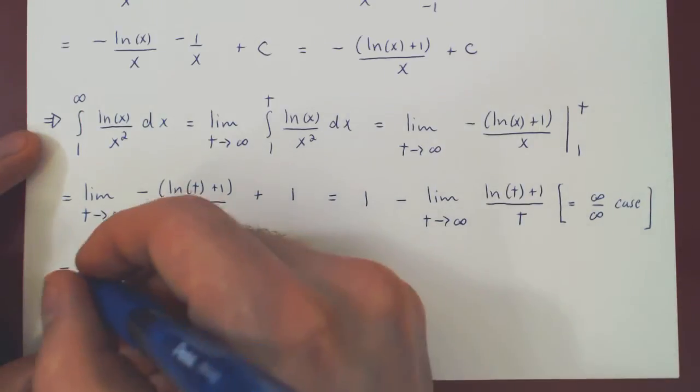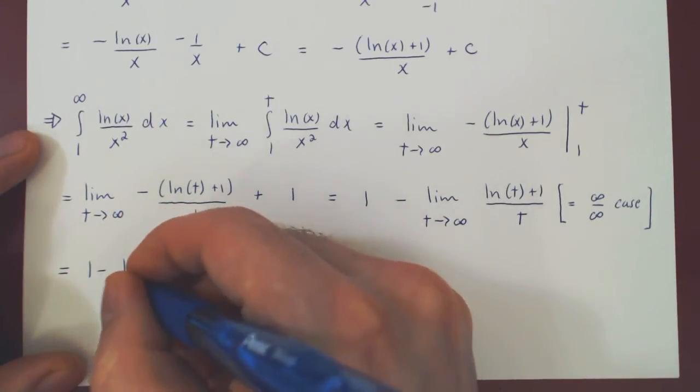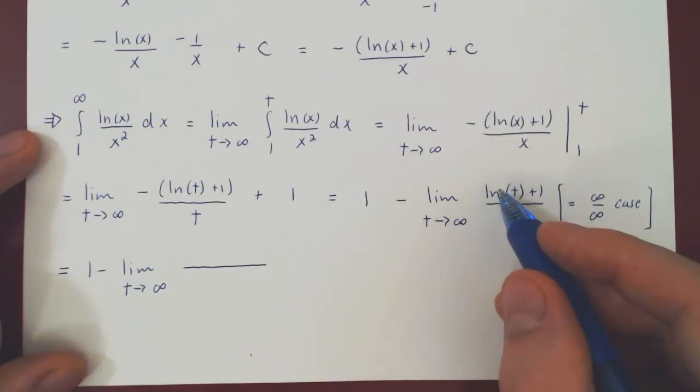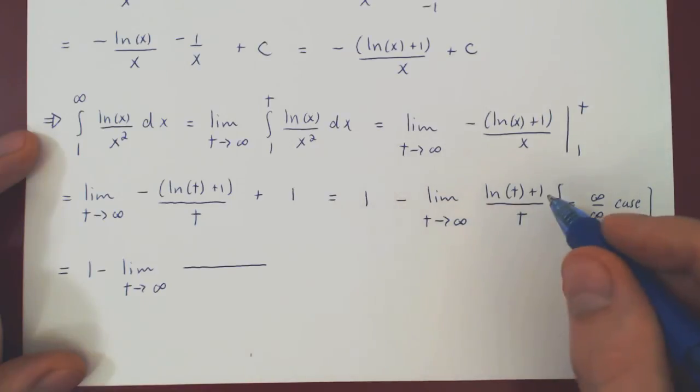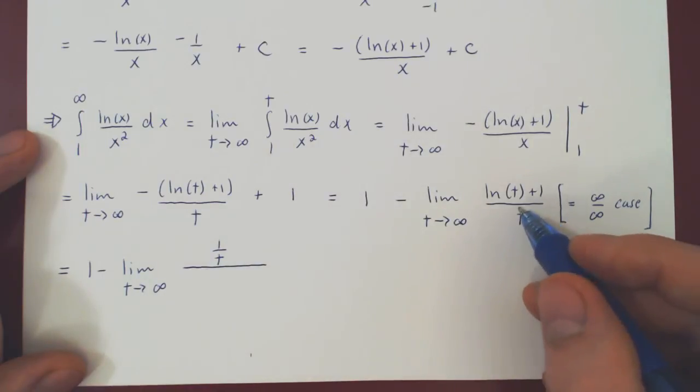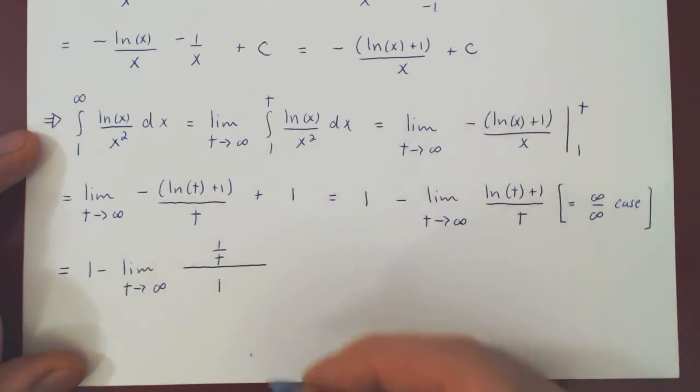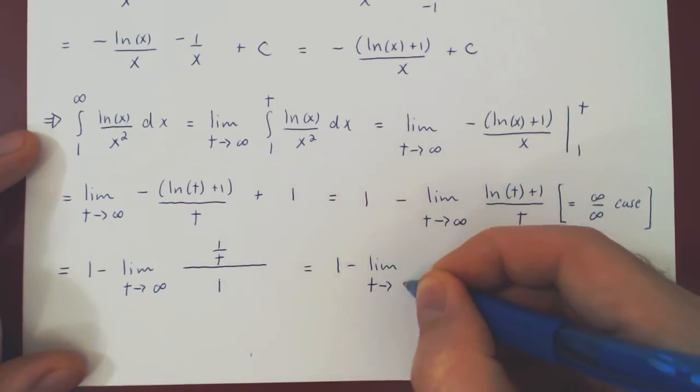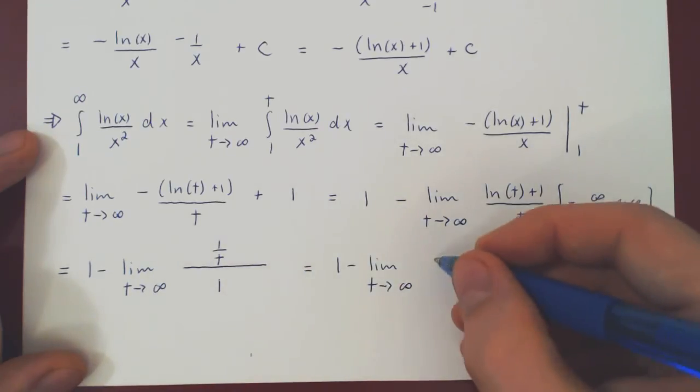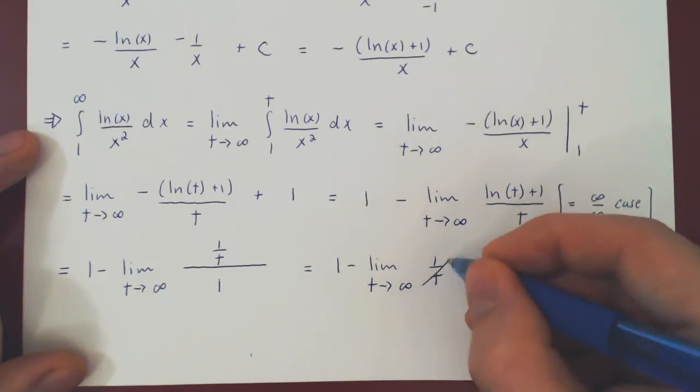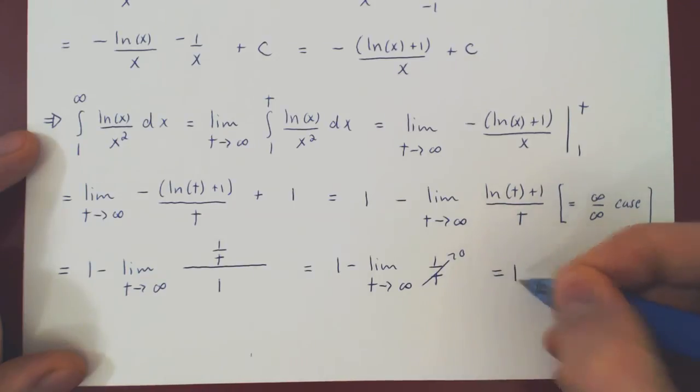So we have 1 minus, this stays there, the limit as t approaches infinity. If you recall L'Hôpital's rule, you replace the numerator by its derivative. If you differentiate ln of t plus 1 with respect to t, you'll get 1 over t plus 0, so it's just 1 over t, over the derivative of t which is 1. So in the end you have a rather simple limit. 1 over t over 1 is just 1 over t, and as t goes to positive infinity, 1 over t shrinks to 0. So in the end we're left with 1.